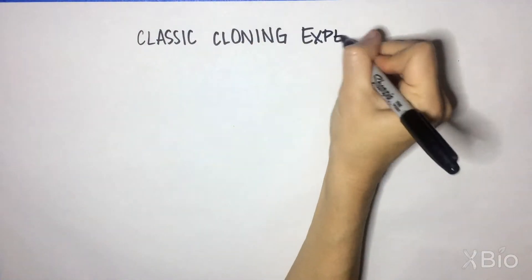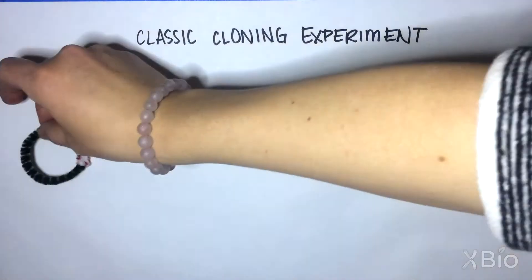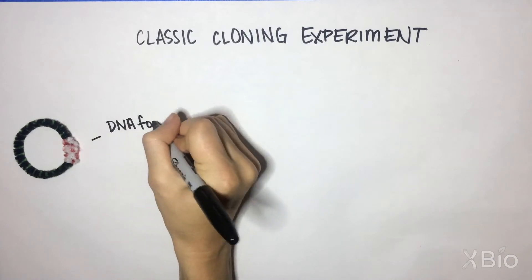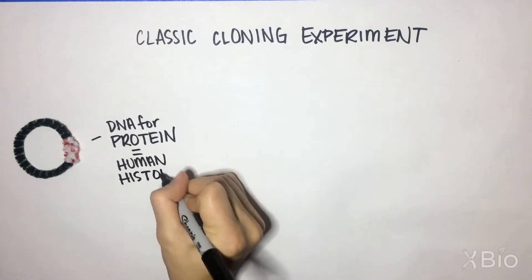Here's an example of a classic cloning experiment. Remember what we want: to overexpress a tagged protein in the cell. We have a plasmid expressing the DNA for a protein. In this example, the human histone.